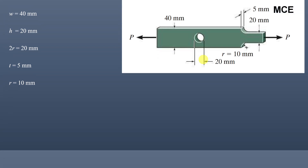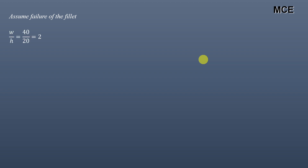First, let us assume that failure of the bar will occur at the fillet. The ratio w/h — that is, the width before the fillet divided by the width after the fillet — is 40/20, which equals 2. The ratio r/h — that is, the radius of the fillet divided by the width after the fillet — is 10/20, which equals 0.5.